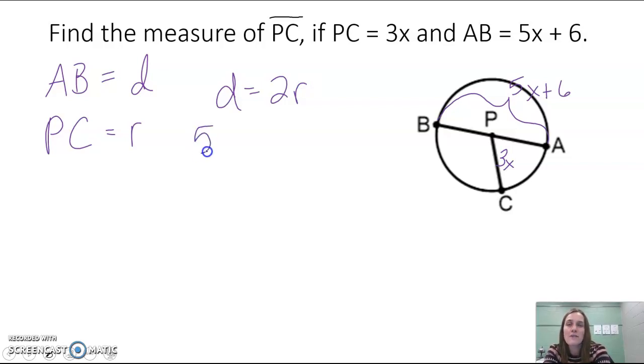So our diameter is 5x plus 6. AB equals 2 times our radius. Well, our radius is 3x. I'm going to take 2 times 3x.